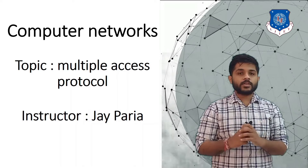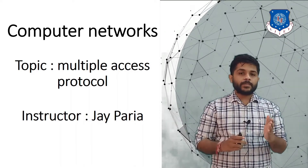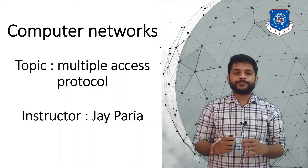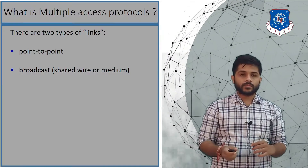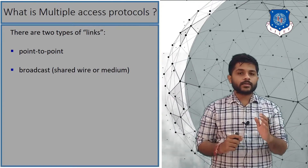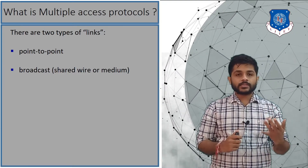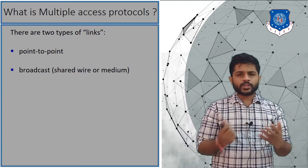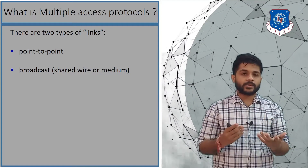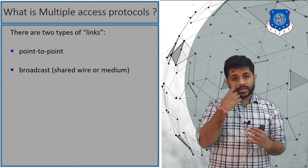Hi everyone, this is Jai, your instructor for computer networks. In this session we are going to see the multiple access protocol and its types. Generally there are two types of links: the point-to-point link and the broadcast link. In a point-to-point link, if two devices want to send data to each other, we provide one link between them so they can send and receive data.